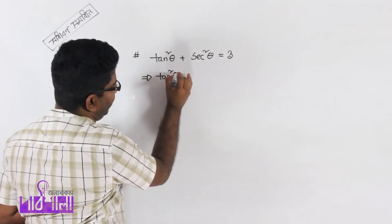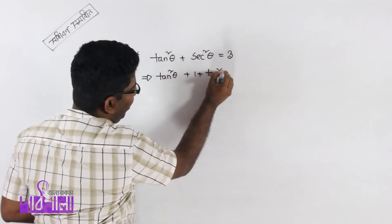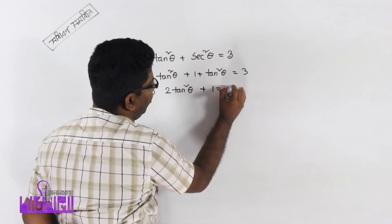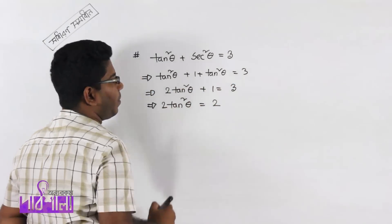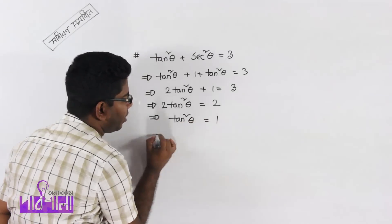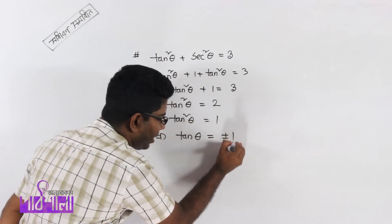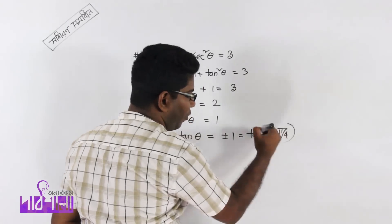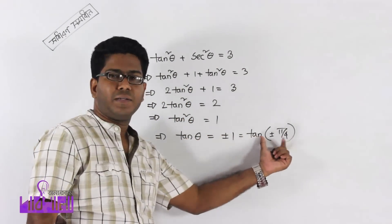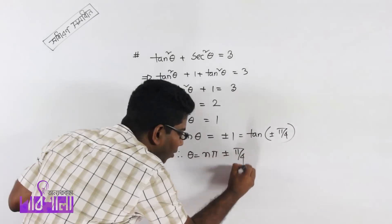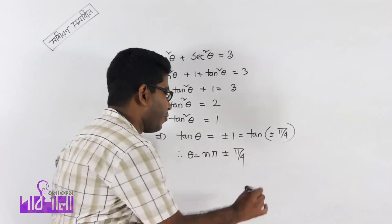For tan²θ plus sec²θ equal to 3: using 1 plus tan²θ equal to sec²θ, we get 2 tan²θ equal to 2, so tan²θ equal to 1. Therefore tan θ equal to ±1, which means tan θ equal to tan(±π/4), giving θ equal to nπ ± π/4, n belongs to Z.